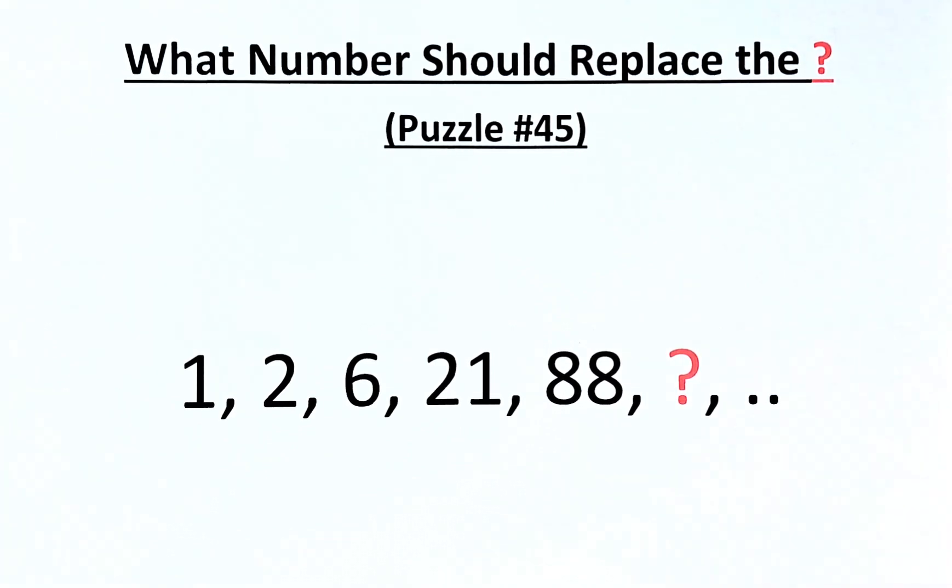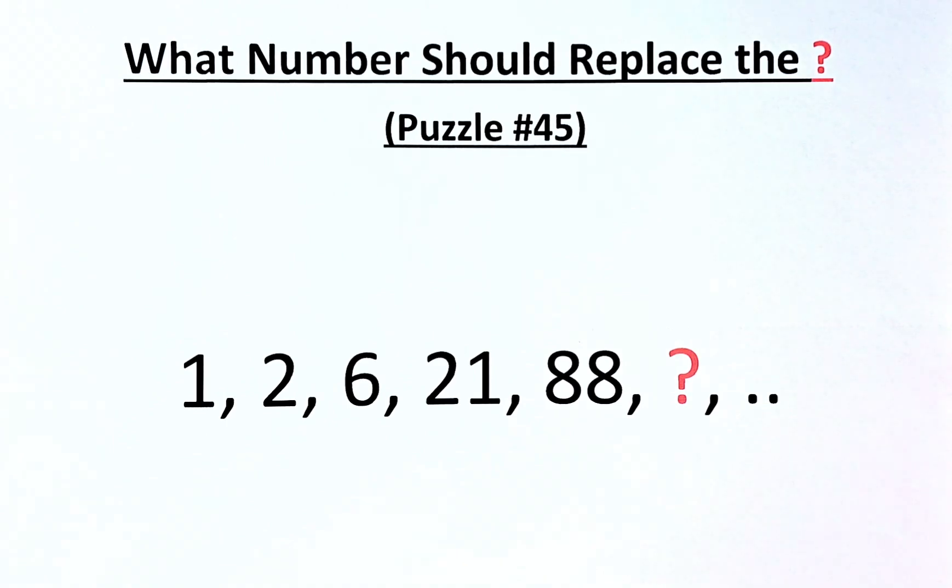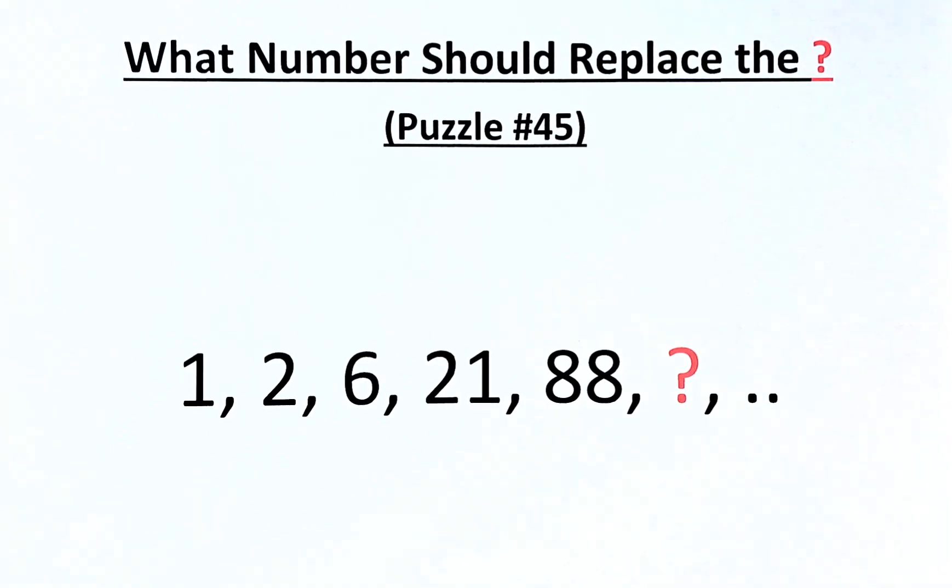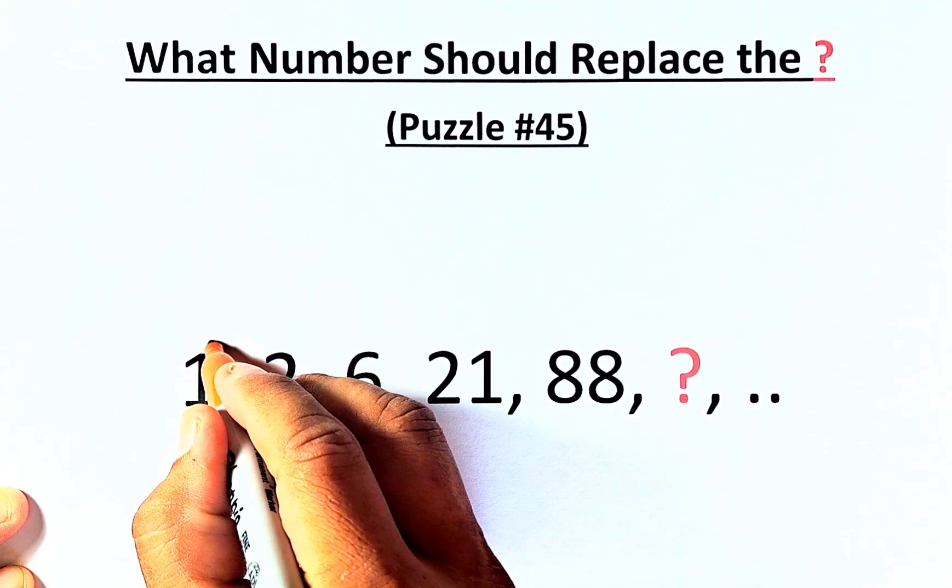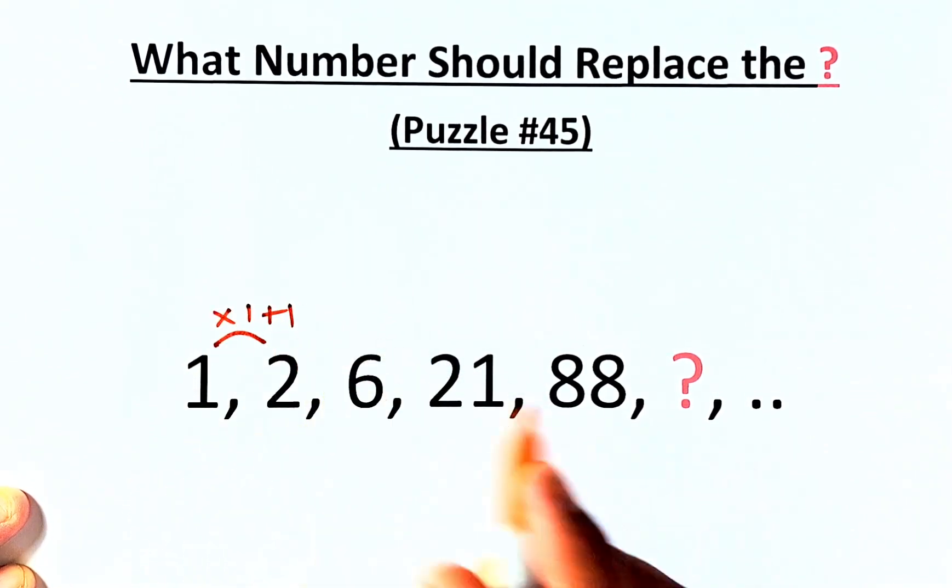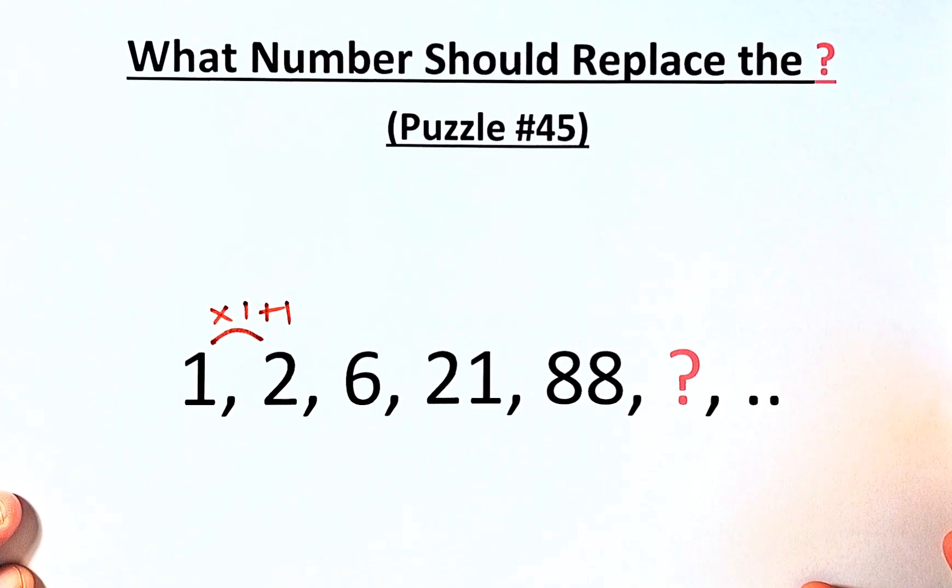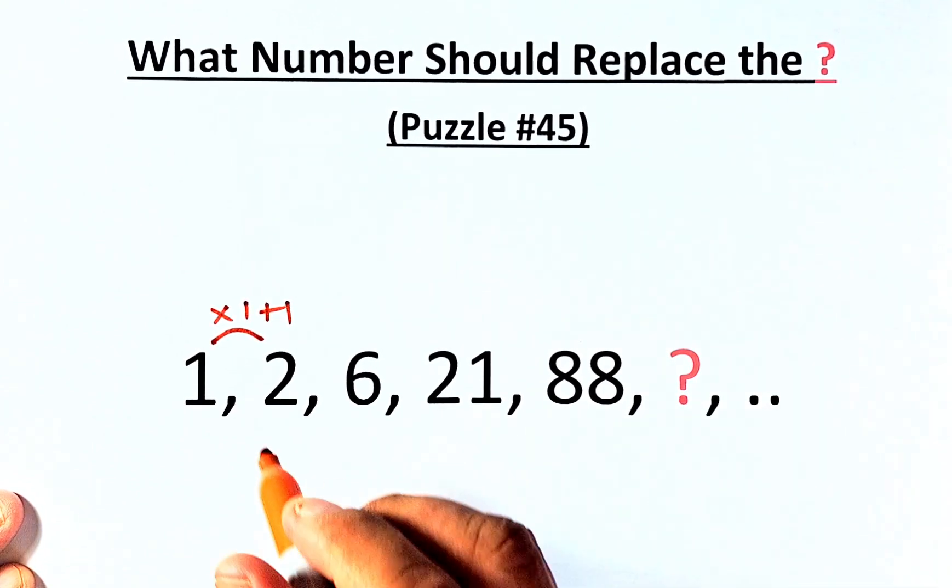Have you managed to solve the number that can be represented by the question mark? If you have, well done because this is quite an interesting puzzle. So to get 1 to 2, we're going to multiply by 1 and add 1. So 1 times 1 is 1 and then we add 1 becomes 2.